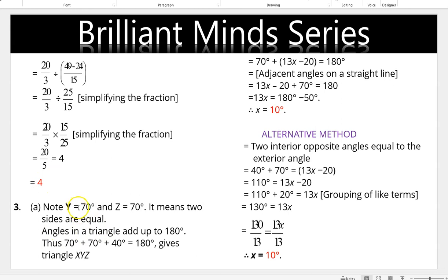Two sides are equal: 70° and 70°. Angles in a triangle add up to 180°: 70 + 70 + 40 = 180°. Writing 70° + (13x − 20) = 180° (angles on a straight line), we simplify to 13x = 180 − 50, giving x = 10°. Alternatively, using the exterior angle theorem: 40 + 70 = 13x − 20. Simplifying and dividing both sides by the coefficient of x also gives x = 10°.